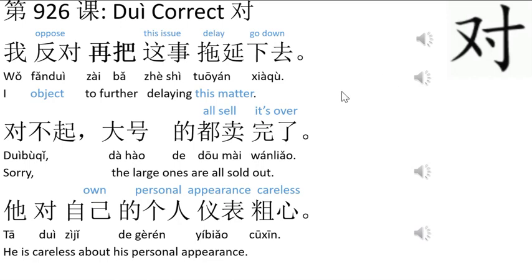我反对再把这事拖延下去 — Object to further delay this matter. 反对 means oppose or object. 再把这事 means this issue. 拖延 means delay. 下去 means go down.